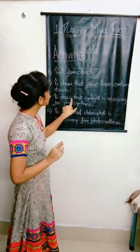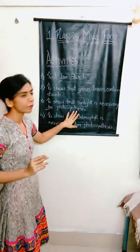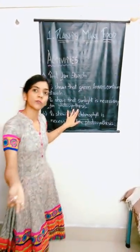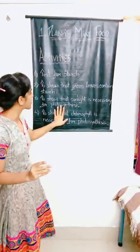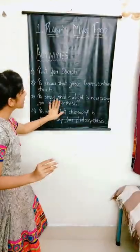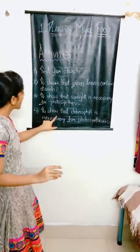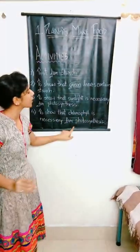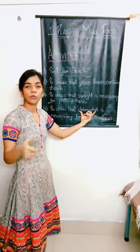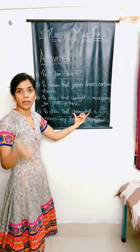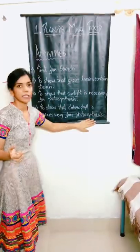The next activity is to show that sunlight is necessary for photosynthesis. I hope all of you are familiar with the word photosynthesis — that is the food-making process of plants. The last activity is to show that chlorophyll is necessary for photosynthesis. Chlorophyll is the green pigment due to which leaves are green in color.